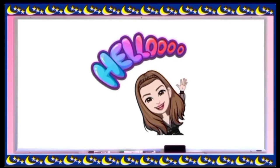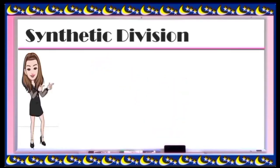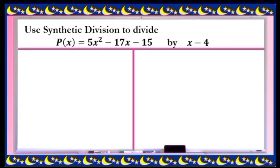Hello, today we will discuss synthetic division of polynomials. Synthetic division is a shorthand or shortcut method of polynomial division, generally used in finding zeros or roots of a polynomial. Let's take this example: use synthetic division to divide p(x) = 5x² - 17x - 15 by x - 4.